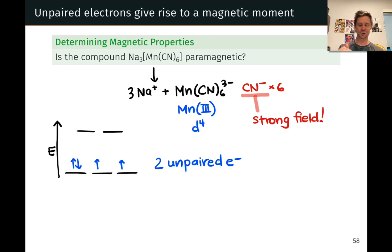2 is not 0, therefore, yes, this compound is paramagnetic. Each molecule of the complex contains 2 unpaired electrons, each of which has a magnetic moment. The compound as a whole is paramagnetic.